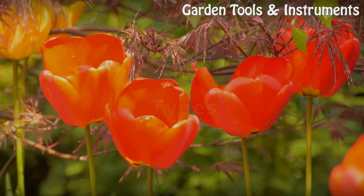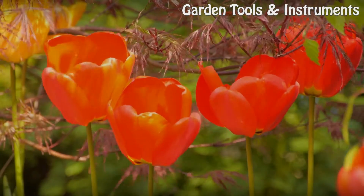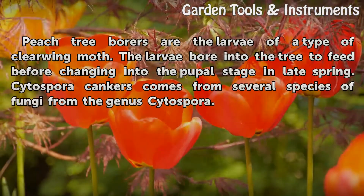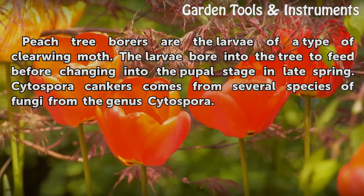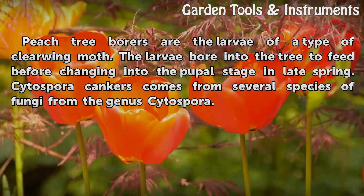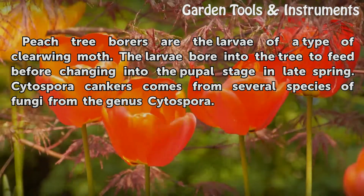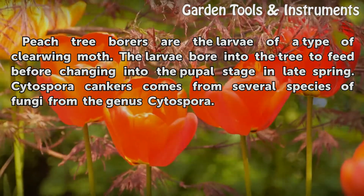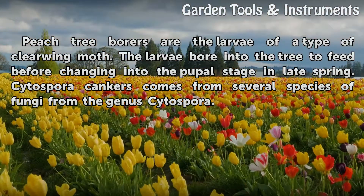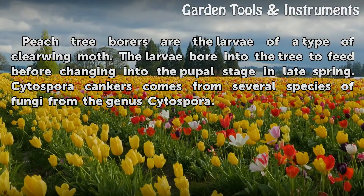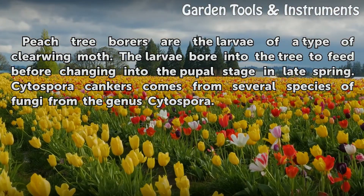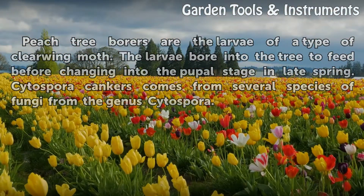Types. Peach tree borers are the larvae of a type of clear wing moth. The larvae bore into the tree to feed before changing into the pupal stage in late spring. Cytospora canker comes from several species of fungi from the genus Cytospora.